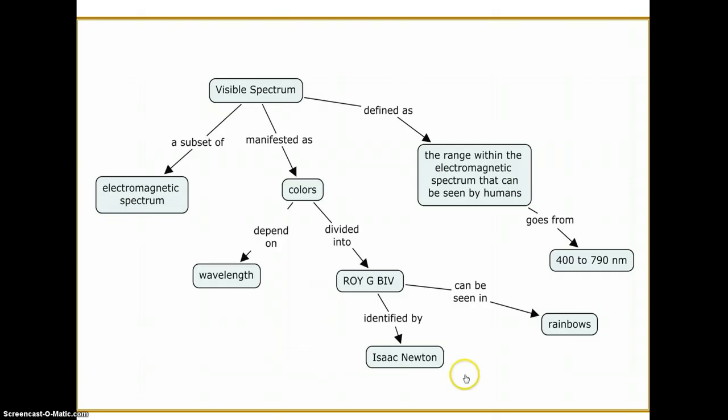Once I generated those, I sat down and organized the concepts and linked them together. So visible spectrum is related to electromagnetic spectrum—I had to determine the relationship. It's a subset of the electromagnetic spectrum. The visible spectrum and colors are related—the visible spectrum is manifested as colors.